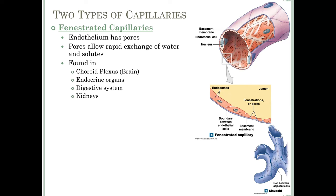Fenestrated capillaries are found in the choroid plexus of the brain — which makes cerebrospinal fluid — in endocrine organs, where they allow hormones to get into the blood more quickly, and in the digestive system and kidneys, which we'll see in upcoming chapters.